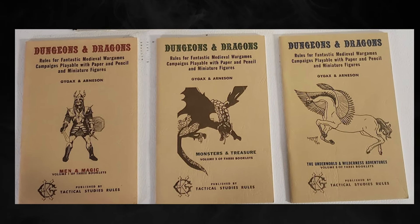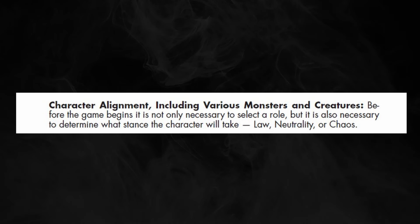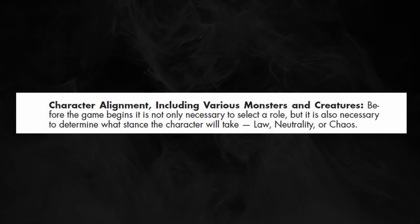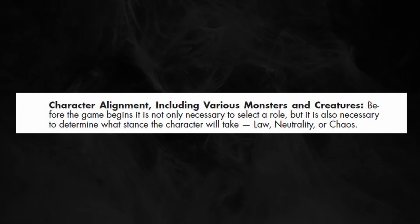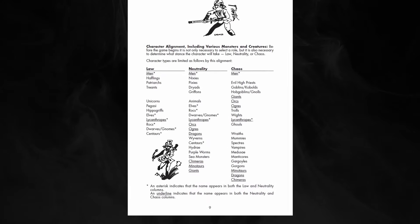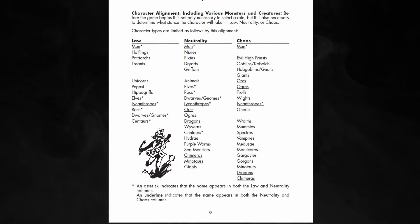If you look at the original D&D game, it actually says very little about alignment when the first three Little Brown Books were published. The first book tells you it's necessary to determine what stance the character will take: law, neutrality, or chaos. It then lists the types of beings that fall under the three categories, but it's surprisingly lacking in what alignment means. It supposes you already have a grasp on law, neutrality, and chaos from fantastical fiction sources. It wasn't until 1981 when the Moldvay-Cook Basic/Expert set came out that we got some clarity on the three-point system.